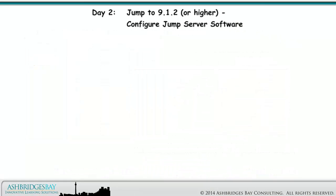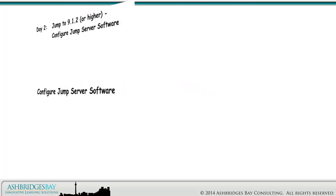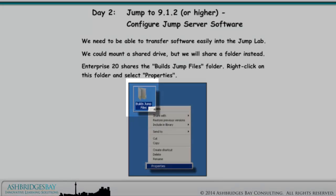Next, we need to configure the other Jump server software: NTP, SFTP, and so on. We need to be able to transfer software easily into the Jump lab. We could mount a shared drive, but we will share a folder instead. Right-click on this folder and select Properties.